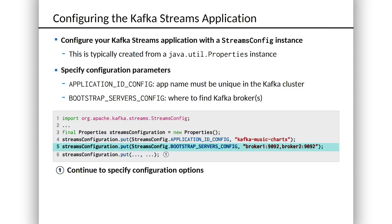Bootstrap servers config is pointing the stream processing application to the Kafka cluster itself. Remember, this code is not running on a broker — it's running outside of the Kafka cluster proper. So this application needs to know where the cluster is. It's typical to put the names or IP addresses of two or three brokers in this list. When an instance of this application wakes up, it can go through that list and ask a broker for everything it needs to know about the cluster and its partitions. In production, you never want just a single broker, because that's a single point of failure. Make sure you've got two or three servers listed in the bootstrap servers config.